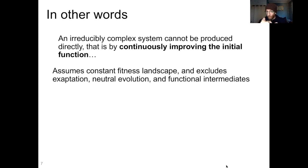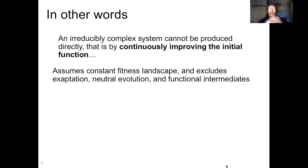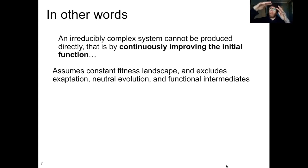This sentence is also excluding from consideration neutral evolution — changes that accumulate that are not being selected for or against. We know you can have variation accumulate via neutral evolution, and then later some of those variants can actually acquire functions. And the last thing here is he's excluding functional intermediates. He's saying it can't be produced by continuously improving the initial function, so you can't have a little bit of function, then a little bit more, then a little more, and ultimately arrive at the form as it exists right now.